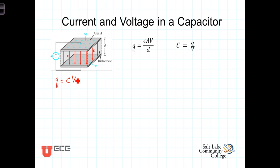Now, we know that by definition, current is the change in charge per change in time, or dQ/dt. So differentiating both sides of Q = CV with respect to t, we have dQ/dt, which is current, equal to the derivative on the right side.